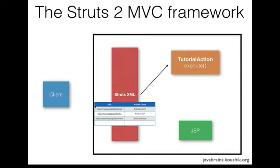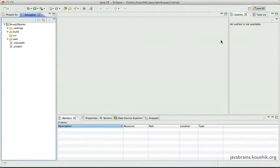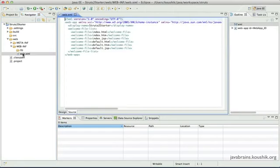So with this configuration in struts.xml and this action class, we have an initial flow established from the client request to a method execution. This is not sufficient for a complete request-response cycle, but it's a good starting point. Let's open up Eclipse and code the first path that we understand so far.